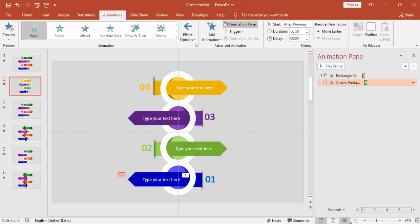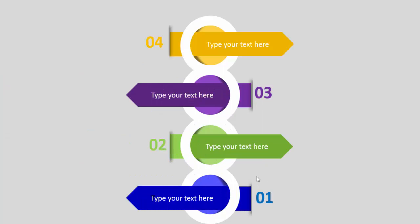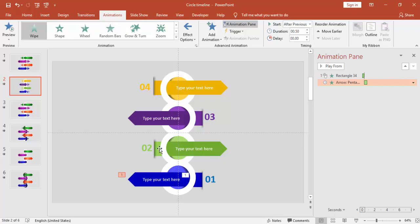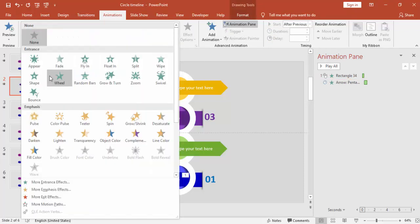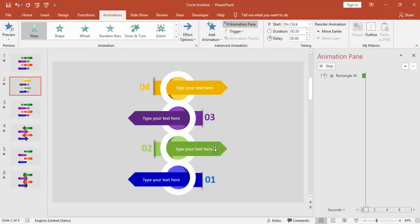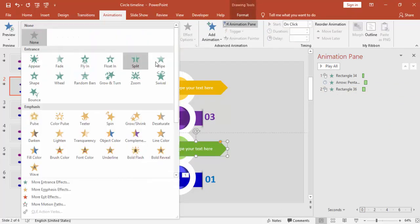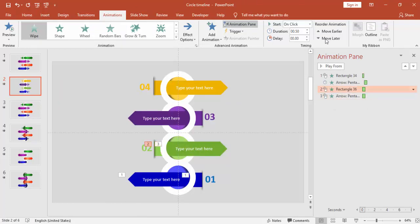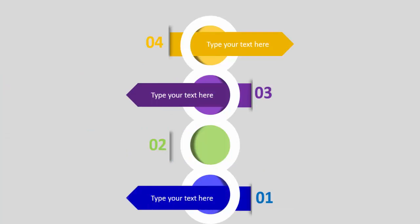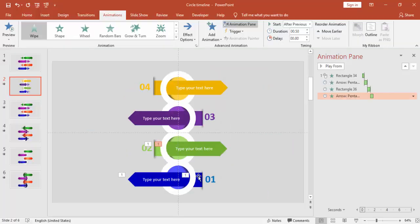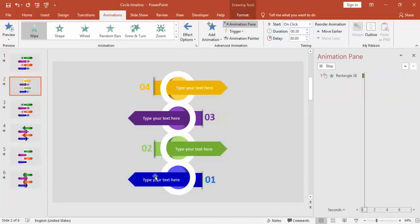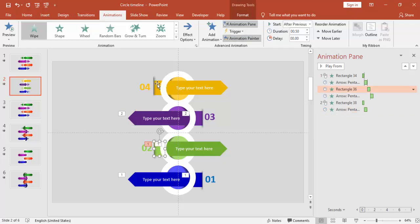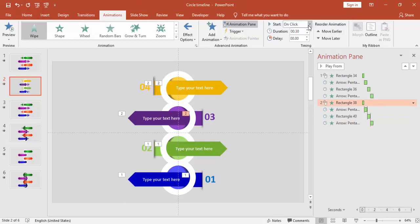Give the same animation effect to the arrow — make it come from the right. Select the second one and set it to Start After Previous, so the first animates and then the second follows. You can copy the animation effect — or redo it with Start From Left for the other side. Select the circle and set it from the left, making it all After Previous. You can copy animations using the Animation Painter, which saves a lot of time. Select the arrow you want to animate and apply the painter — I always use Animation Painter to save time on my slides.